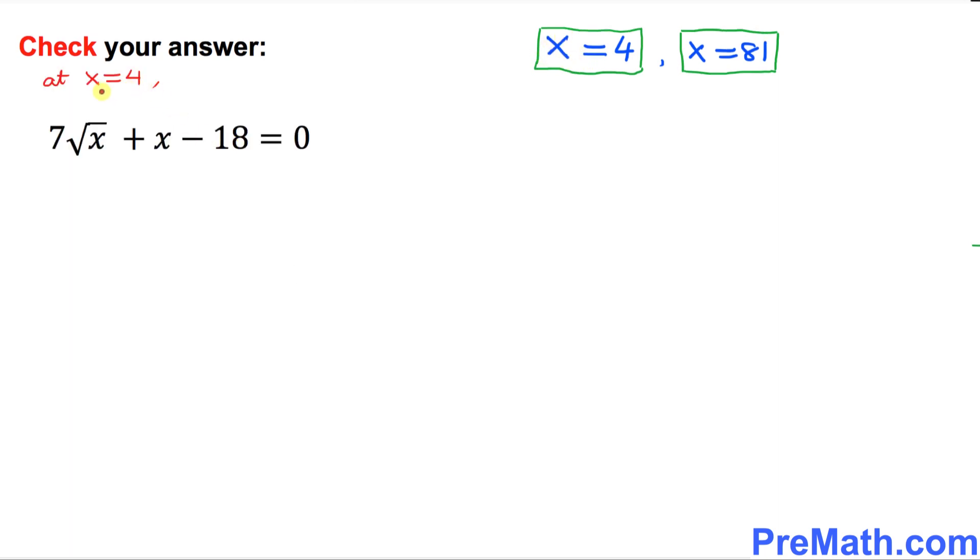Now we're going to check our answer at x equal to 4. So wherever you see x, replace it by 4. So that is going to simply become 7 times square root of 4, and this is simply 4 minus 18. My question is, is the left hand side equal to the right hand side, which is 0? We know that square root of 4 is 2. So 7 times 2 plus 4 minus 18, 14 plus 4 minus 18, question mark. Is it equal to 0?